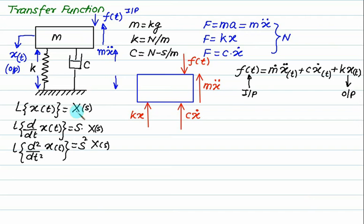The Laplace transform of x dot of t is s into x of s. These results are valid assuming the initial conditions are zero. We take the Laplace transform.